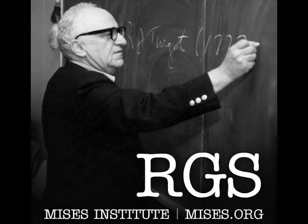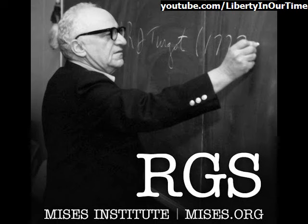Mainstream economists almost never talk about economic profits except maybe in intro micro when they're trying to show the difference between accounting and economic profit — but then that drops out, especially at graduate school. I might never have heard the term entrepreneur at NYU except in the Austrian colloquium. Once you get to the level where you're doing general equilibrium theory and everything's in equilibrium, what role would there be for entrepreneurship or profits and losses?